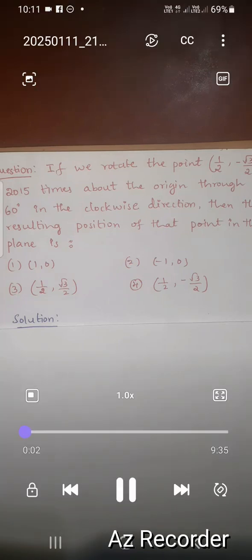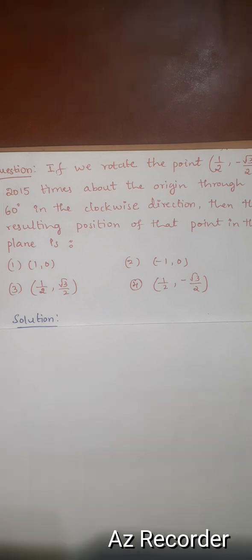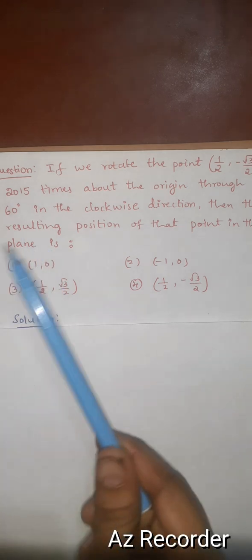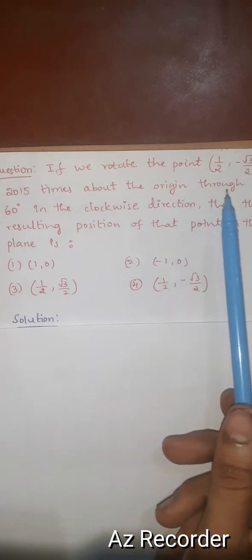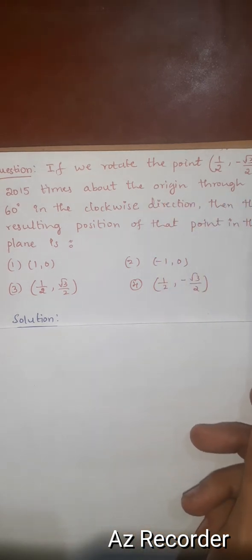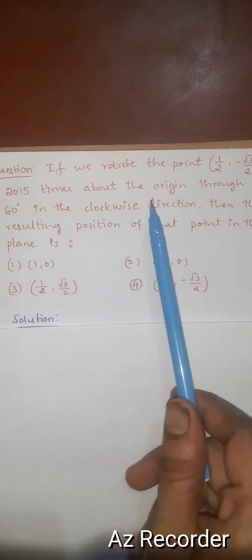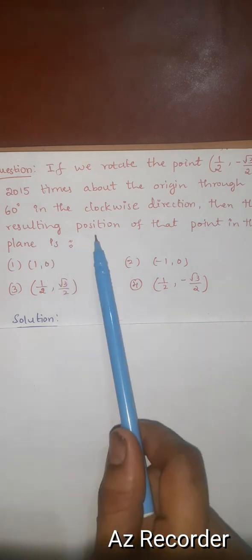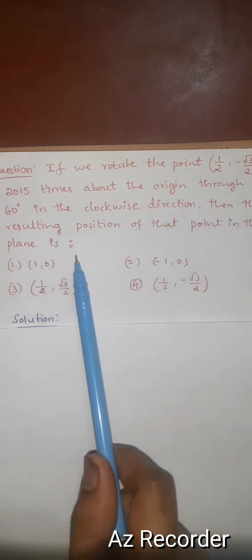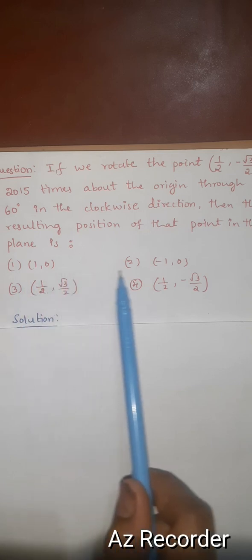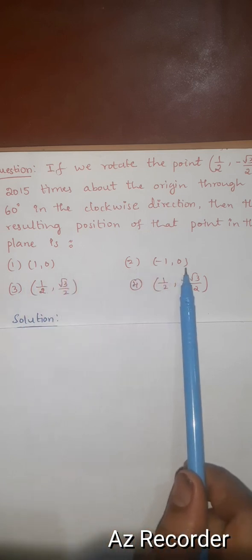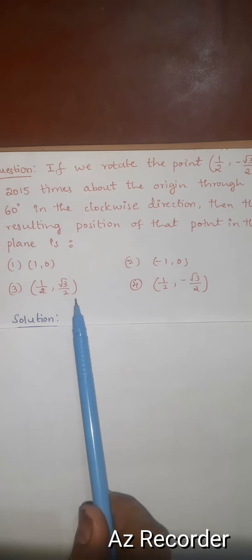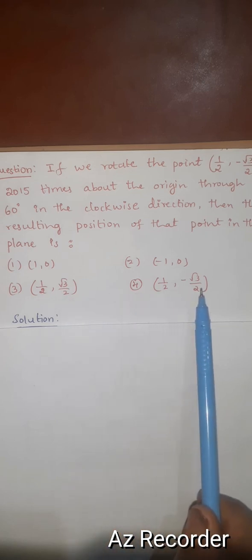Hello everyone. Welcome to math learning with Shobita. Today we will discuss a question from complex analysis from the Arindaksheth examination 2024. The question is: if we rotate the point (1/2, -√3/2) 2015 times about the origin through 60 degrees in the clockwise direction, then the resulting position of that point in the plane is — option 1: (1, 0), option 2: (-1, 0), option 3: (1/2, √3/2), option 4: (1/2, -√3/2).